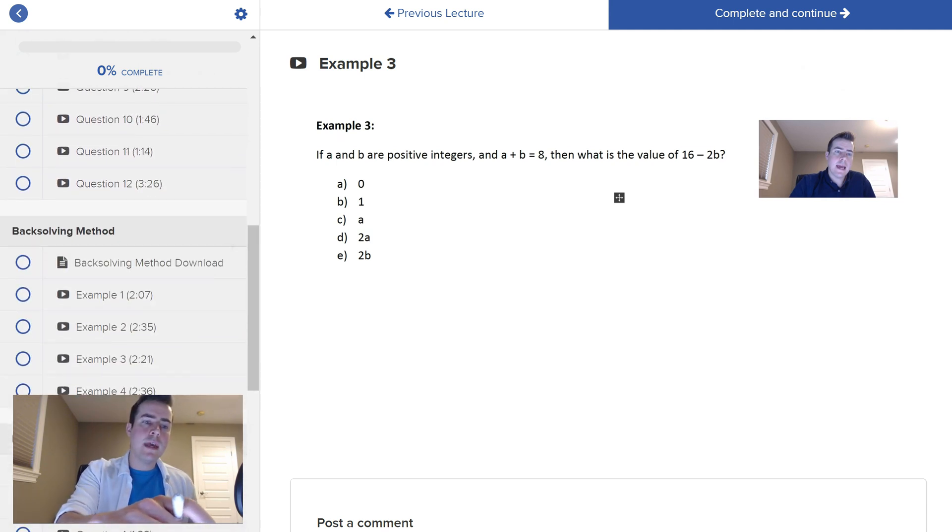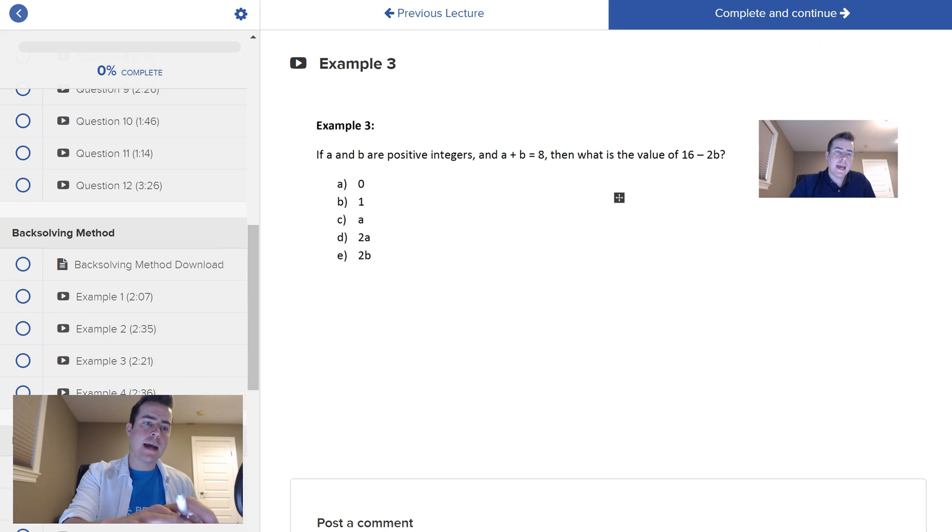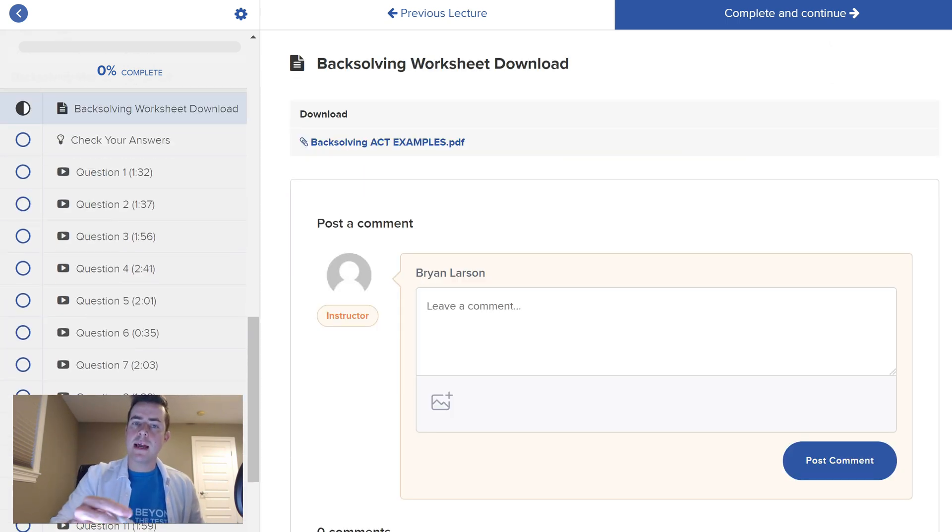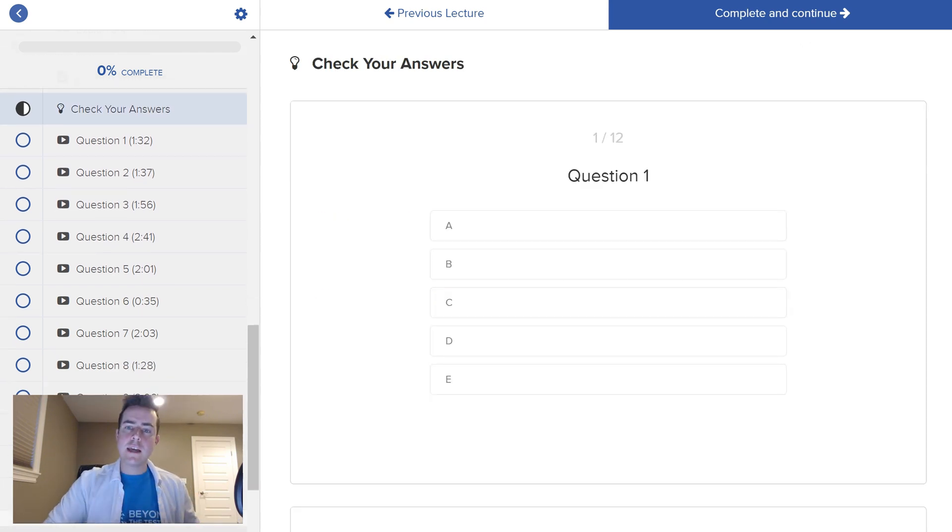We also have in here different worksheets so like the back solving method. You'll be able to download this worksheet simply by clicking that link above and then after you do that, you can run through that and you can actually check your answers. So for those 12 questions, you'll be able to enter in an answer for each problem. So if I put C, I could check that and oh, that one's wrong.